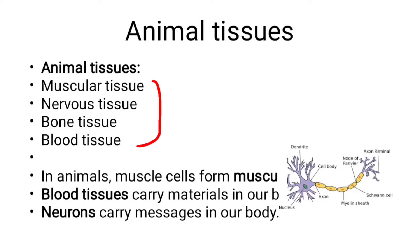Animal tissues include nervous tissue, bone tissue, connective tissue, and blood tissue. Muscle cells form muscle tissue, which is responsible for movement. Blood tissue transports materials such as oxygen, carbon dioxide, food, and hormones. Nervous tissue is made up of neurons — nerve cells found in the brain and throughout the nervous system.